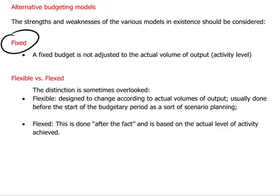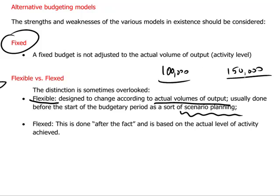The next type of budget we need to know for the paper is the idea of a flexible budget. The flexible budget is one that allows at the budget planning process to play with different assumptions and to say, at different volumes of output, production and sales, what will my cost structures look like? So it's a kind of scenario planning in which we draw up flexible budgets — maybe budgets for 100,000 units or 150,000 units.